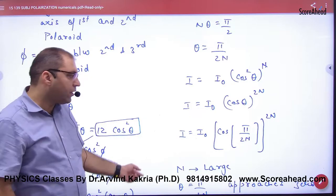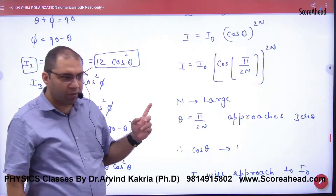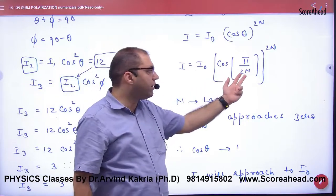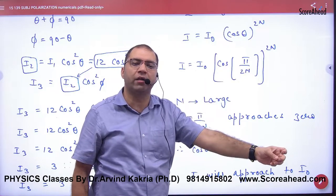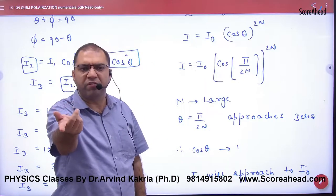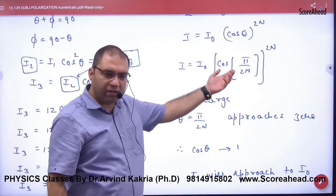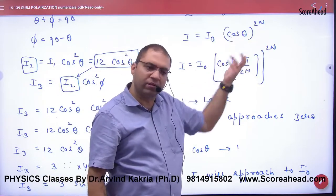Next, if N is very large, then the denominator is very big, then this fraction is very small. Cosine of a very small angle, approaching 0, becomes 1. Cos of 0 is 1. Cos of very small angle is 1.